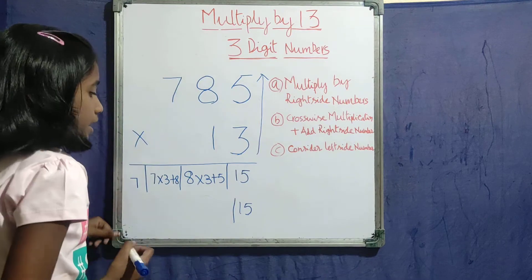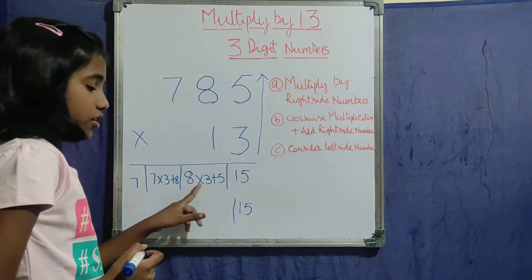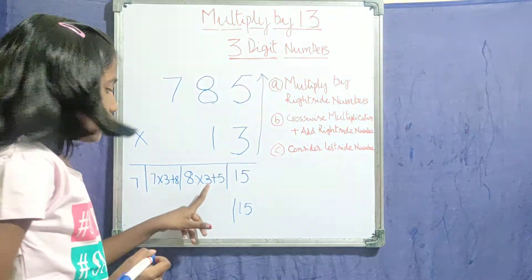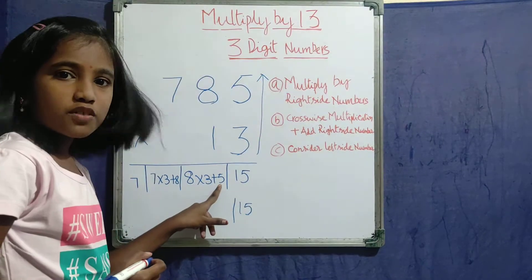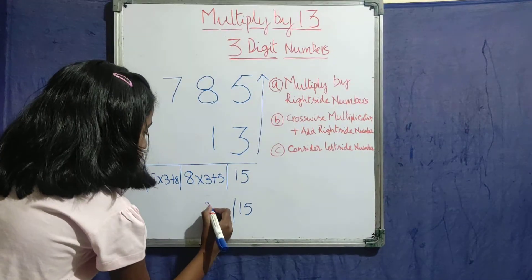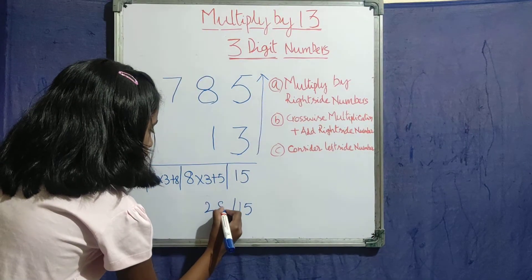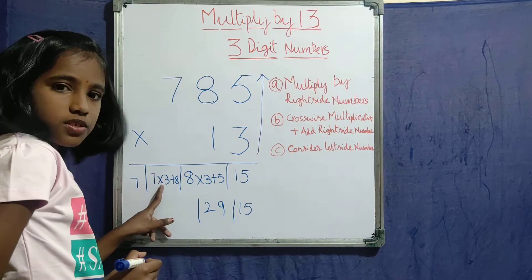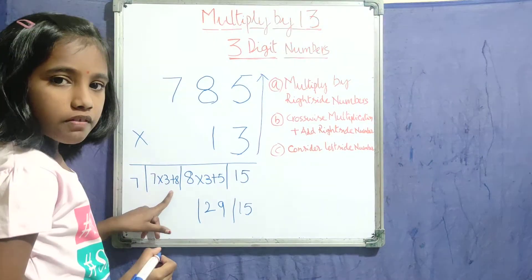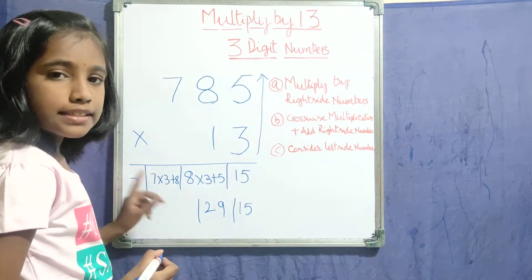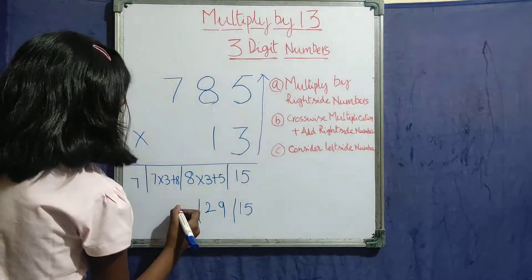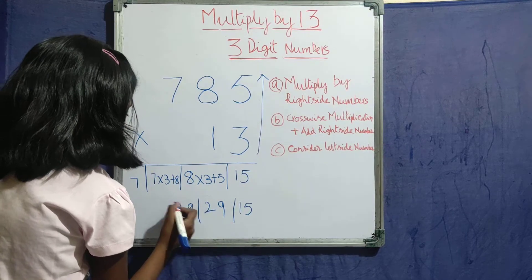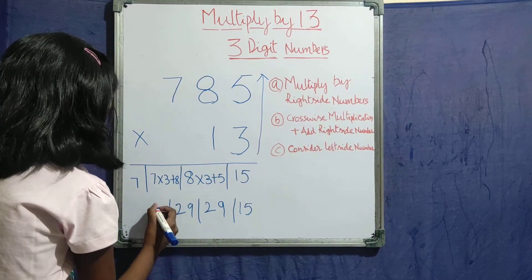Now, 8 times 3 is 24. 24 plus 5 is 29. So 29. Next, 7 times 3 is 21. 21 plus 8 is 29.